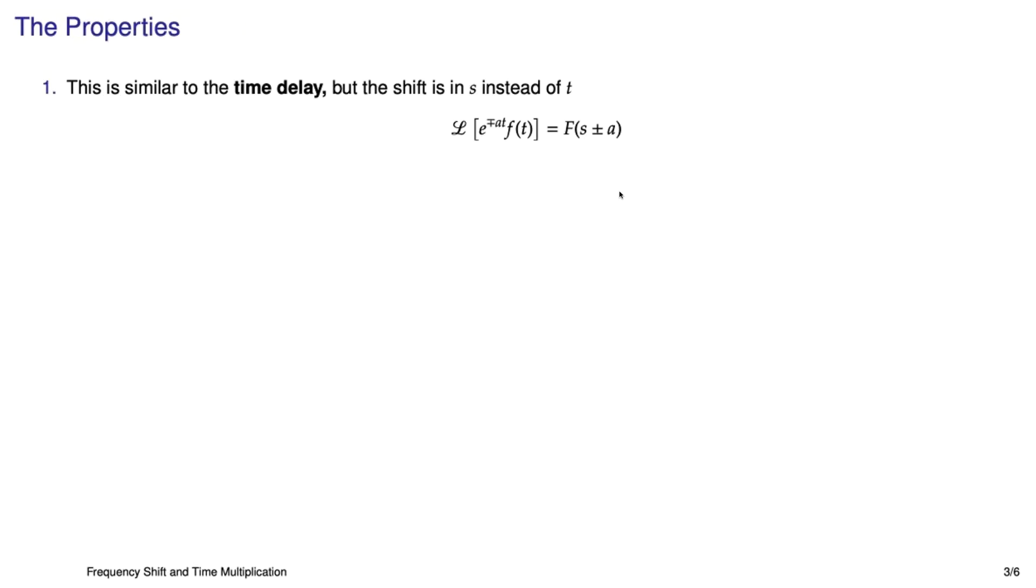The complex frequency shift is very much like the time delay property that we looked at in another video. But here, you have to just recognize when you have an e^(-at) or an e^(at) multiplied by some other function. Then all you do is take the Laplace transform of that other function, and then replace every occurrence of s with s plus or minus a. And notice the difference in the signs. So if it's e^(-at) times f(t), then you replace s with s+a, and you flip that around if it's e^(+at).